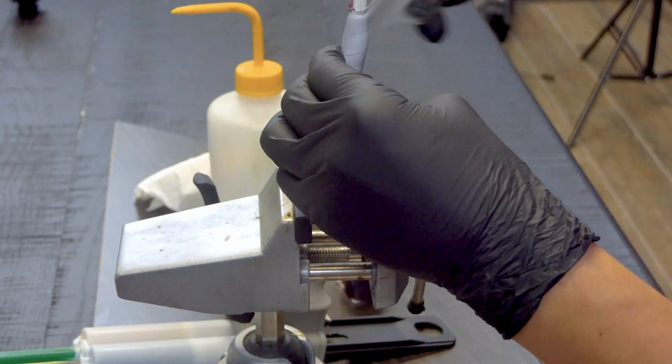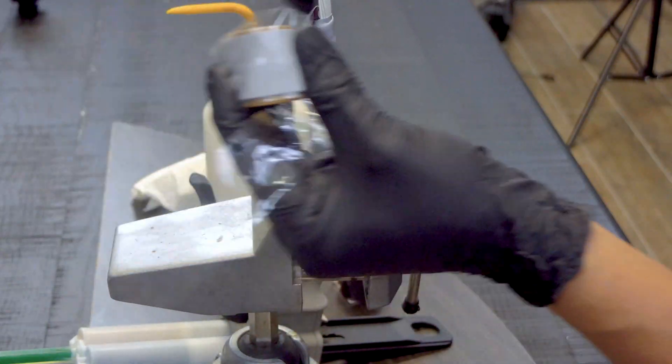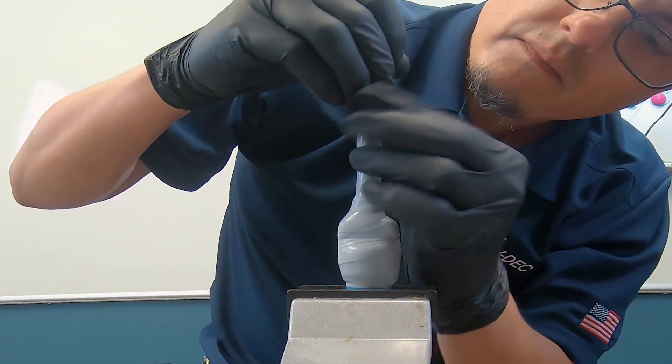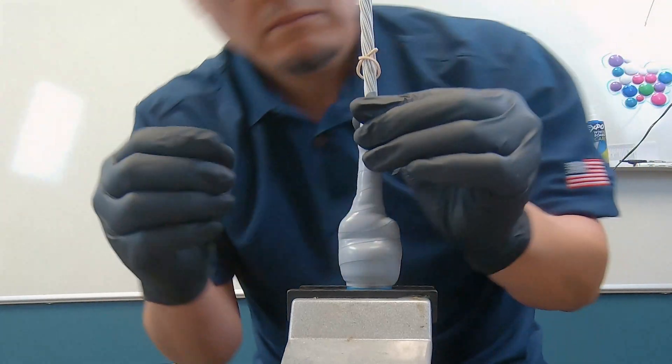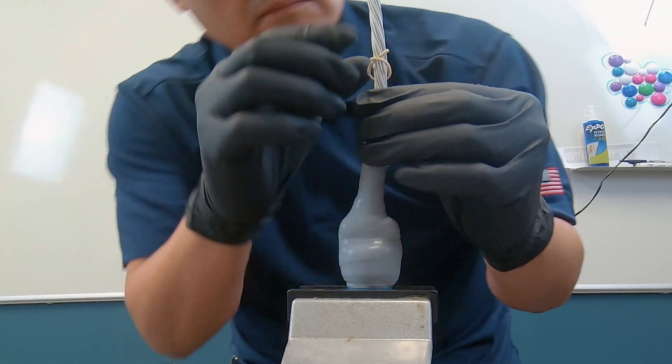Continue to wrap the self-fusing silicone tape until at least one complete wrap past the end of the stretch seal tape. Make one complete wrap over the top of the last wrap. The first and last wrap must always be a complete wrap directly over the top of the previous wrap.